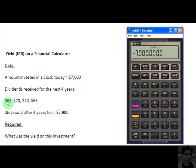Now I'm going to look at these numbers. $65 is the dividend that I receive at the end of the first year, so I punch in 65 and store it into the cash flow button. Then I have 70, so I punch in 70 and store it again into the cash flow button. Then I have this 70, so I punch in 70 and store it into the cash flow button.